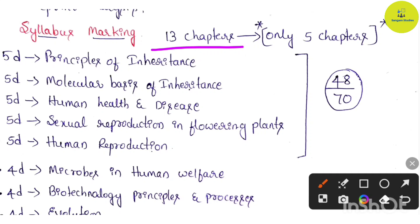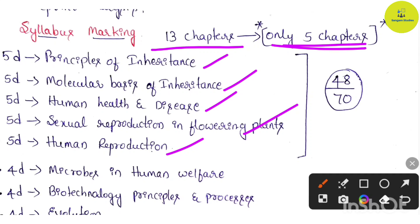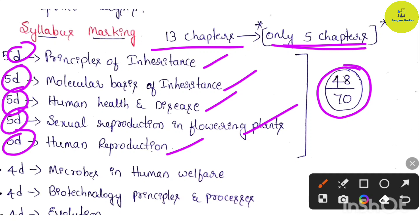In these 13 chapters, 5 chapters are very important and should be covered 100% without skipping any topic. These 5 chapters are: Principles of Inheritance, Molecular Basis of Inheritance, Human Health and Diseases, Sexual Reproduction in Flowering Plants, and Human Reproduction. Give 5 days each to complete these 5 chapters. Out of 70, you can easily score 48 marks just from these 5 highest-weightage chapters.